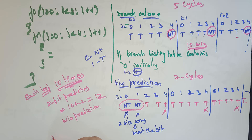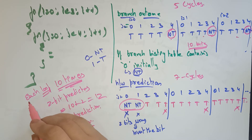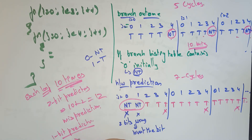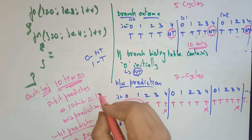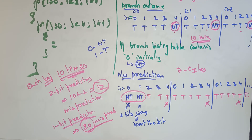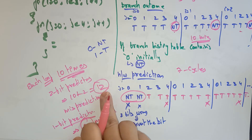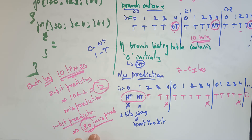Whereas in 1-bit prediction, if you take each loop 10 times, you will get 20 mispredictions. That is the main difference. Did you reduce the stalls? Yes — if you go with 2-bit prediction, you reduce the stalls. In 2-bit branch prediction you get only 12 stalls, whereas in 1-bit branch prediction you got 20 mispredictions.